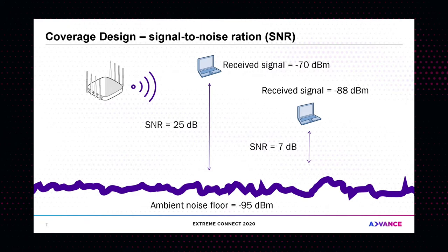A bad SNR example: if your noise floor is -95 dBm and your received signal is -88 dBm, you have an SNR of about 7 dB. When the received signal gets too close to the noise floor, you get corrupted packets and frames. Corrupted frames must be retransmitted, which reduces overall throughput and degrades network performance. So you want to prevent that.